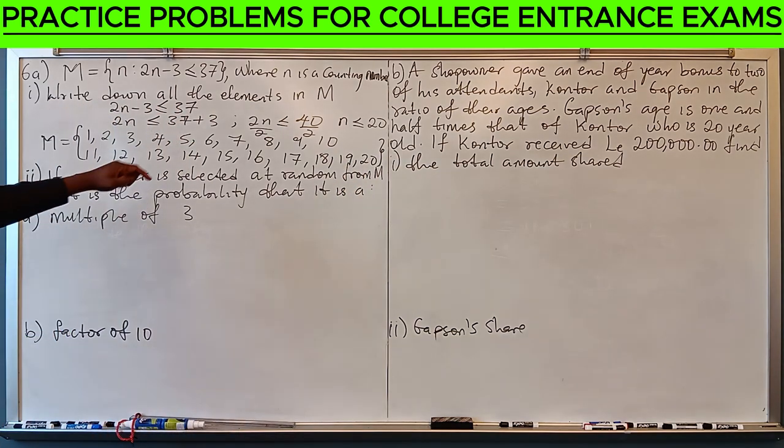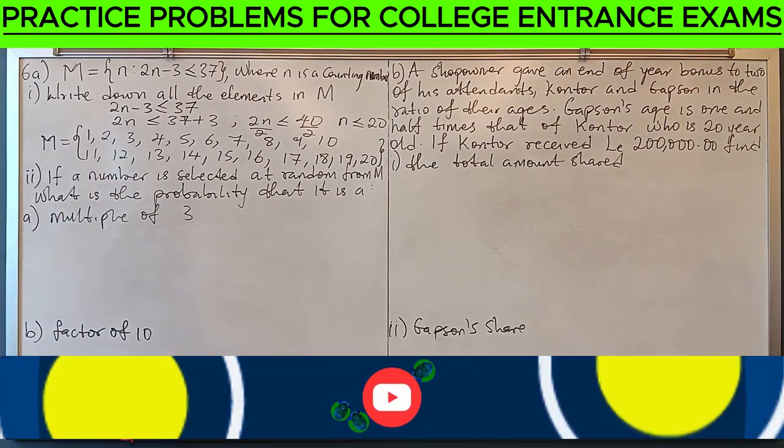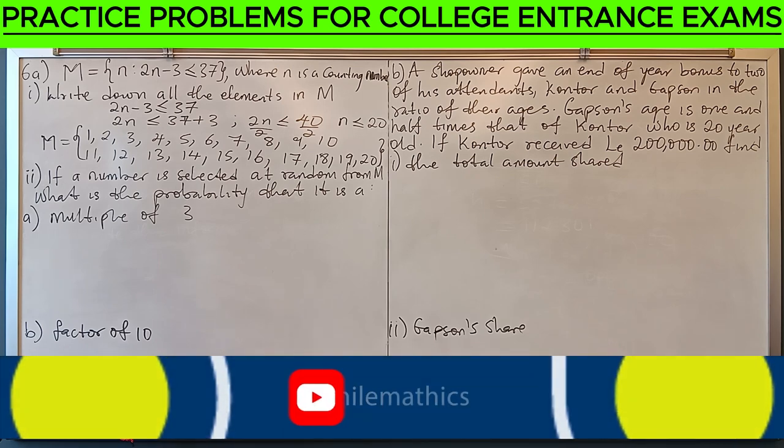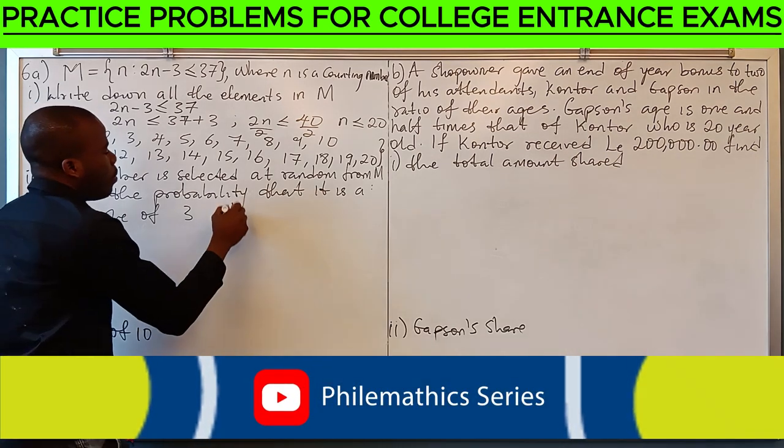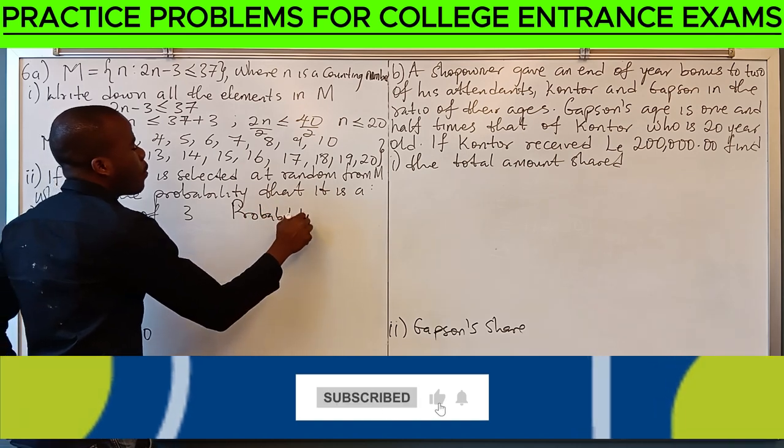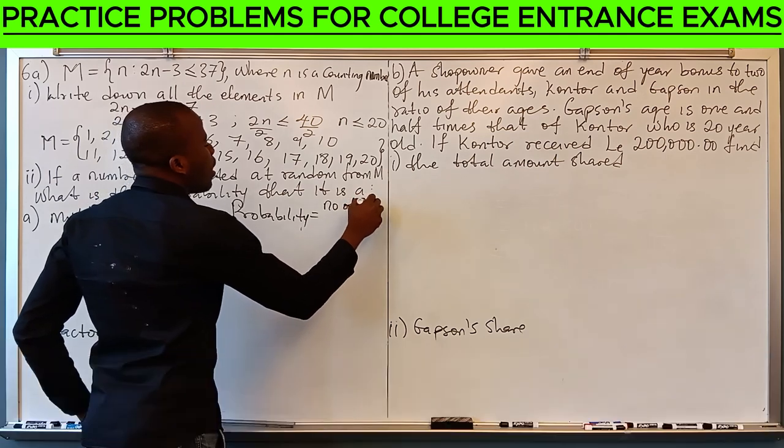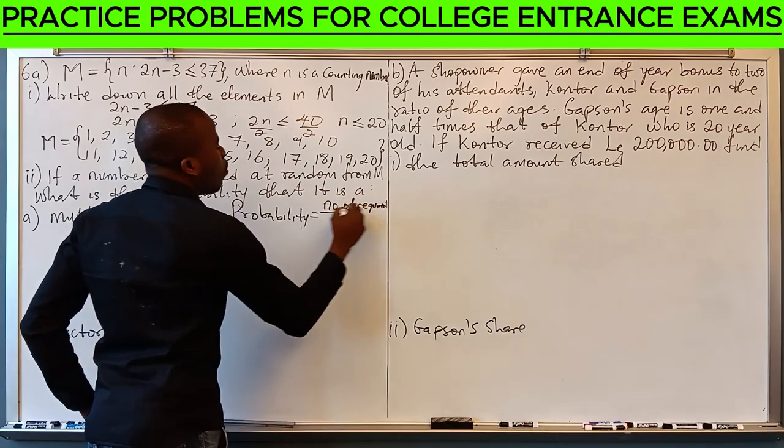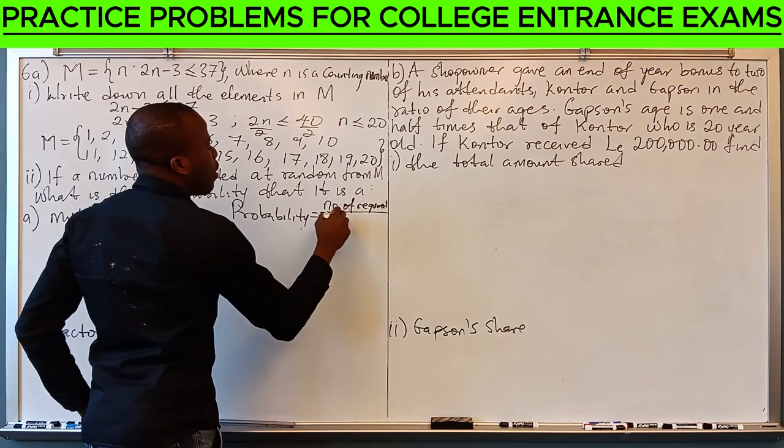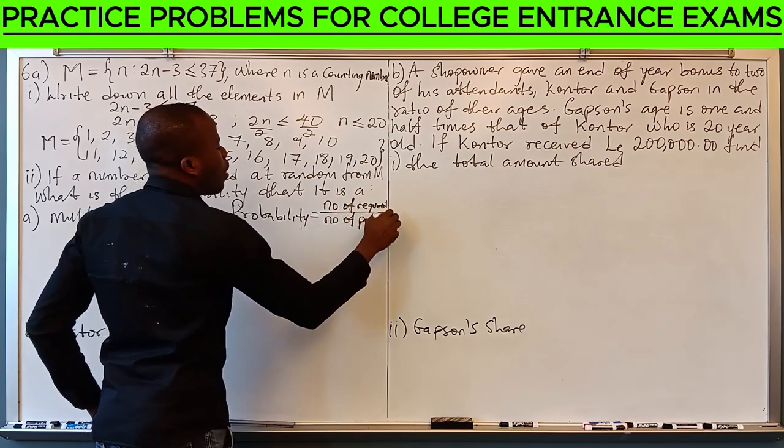If a number is selected at random from M, what is the probability that it is a multiple of 3? First of all, what is the formula for probability? The formula for probability is number of required outcome over number of possible outcome.